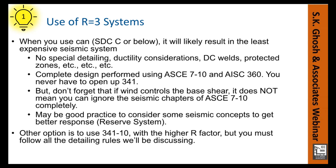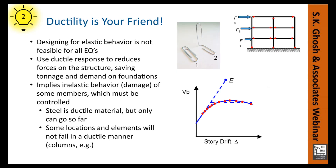You can also use the higher R factor, but then you would have to go through and use AISC 341 and follow all the detailing rules — it's probably a more expensive structure. When we're talking about seismic design, ductility is our friend. We always need to be trying to build in as much ductility into our systems as possible.